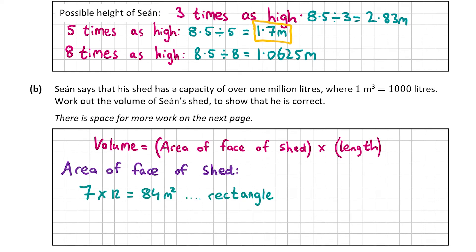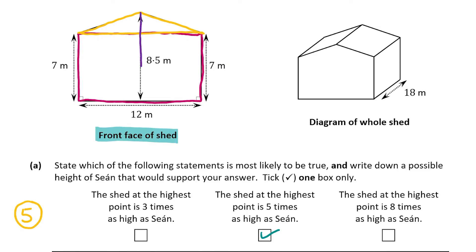Now we need the area of the triangle. The formula is half the base by the perpendicular height — that upside-down T before the h means perpendicular, so the height must be exactly 90 degrees to the base. The total shed height is 8.5 meters and the rectangular part is 7 meters, so the triangle's height is 1.5 meters (8.5 − 7). The base of the triangle is 12 meters, since opposite sides in the rectangle are equal, and the height is indeed perpendicular — straight up from the base.